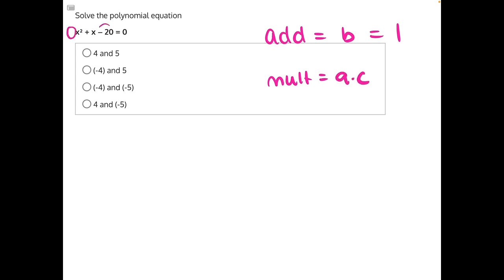A times C would be 1 times negative 20, which is negative 20. From there we just need to create a factor tree to find this pair of numbers. Let's take negative 20 and find all of its factor pairs: we have 1 times 20, we have 2 times 10, we'd have 4 times 5, and that's where we'll go ahead and stop.